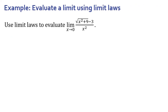So let's look at this example: use limit laws to evaluate the limit as x approaches zero of the square root of x squared plus nine minus three, all over x squared. When I look at this problem, if I substitute zero in for x, I'm going to get zero in the numerator and zero in the denominator. So I'm in that indeterminate form zero over zero. I've done step one — I've realized I'm in this form. So now let's do step two.